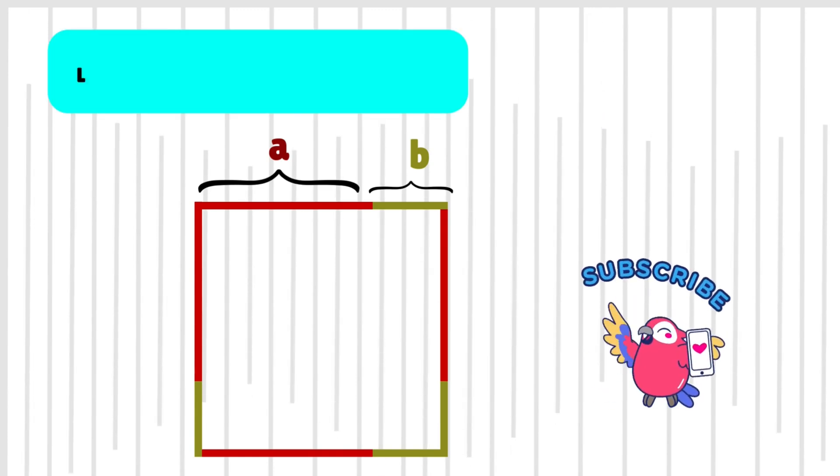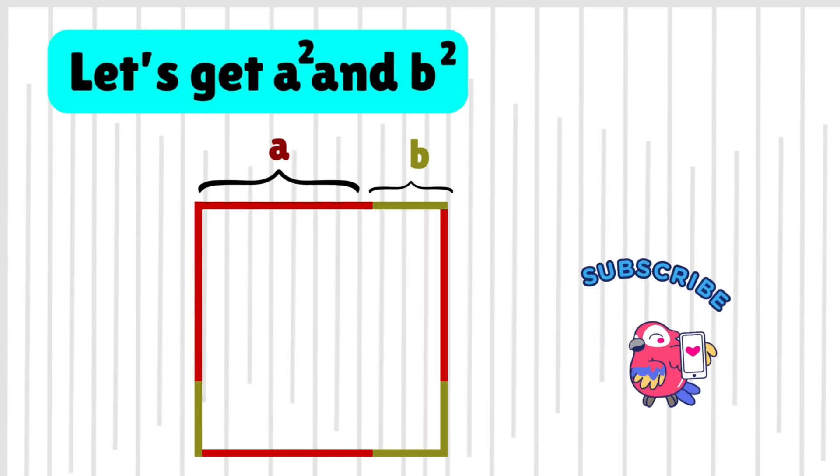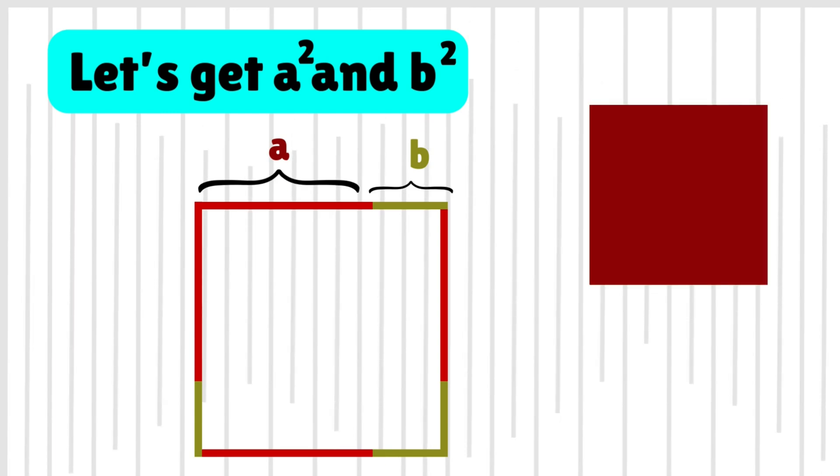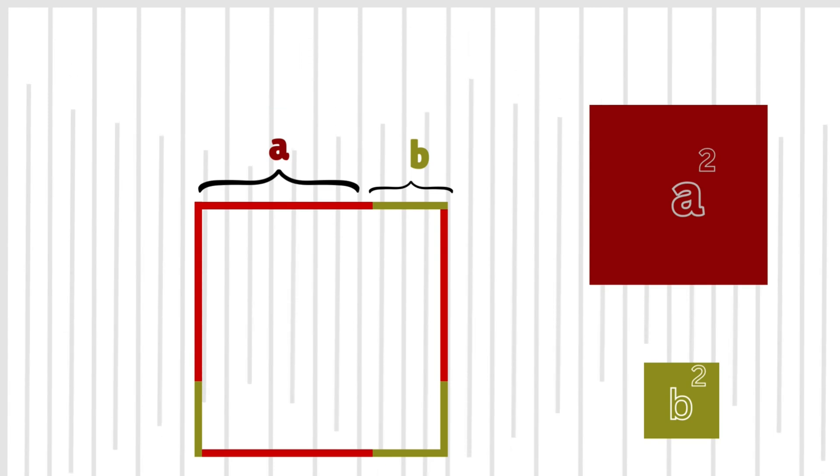Let's get a square and b square here which we had drawn earlier. We can now place both boxes in the big box.